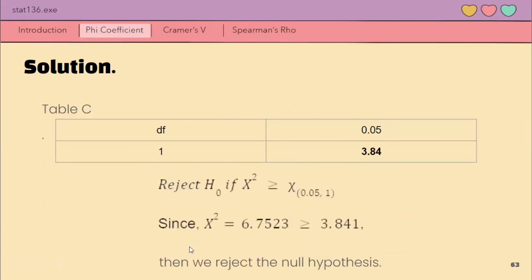Then, we reject H null if our test statistic is greater than or equal to chi square at 0.05 and degrees of freedom 1. This chi square is equal to 3.84. And again, this value is from table C. Since our x square is equal to 6.7523 and mas malaki ito sa ating critical value na 3.84, then we reject the null hypothesis.